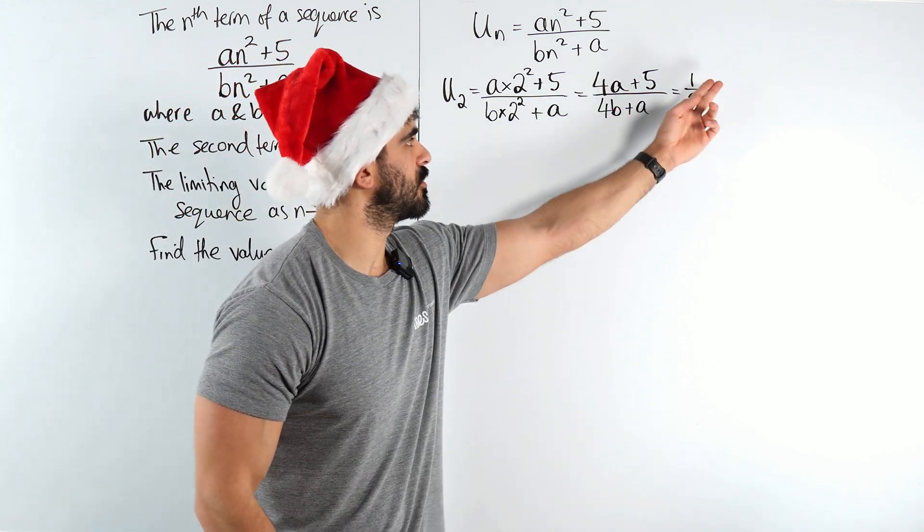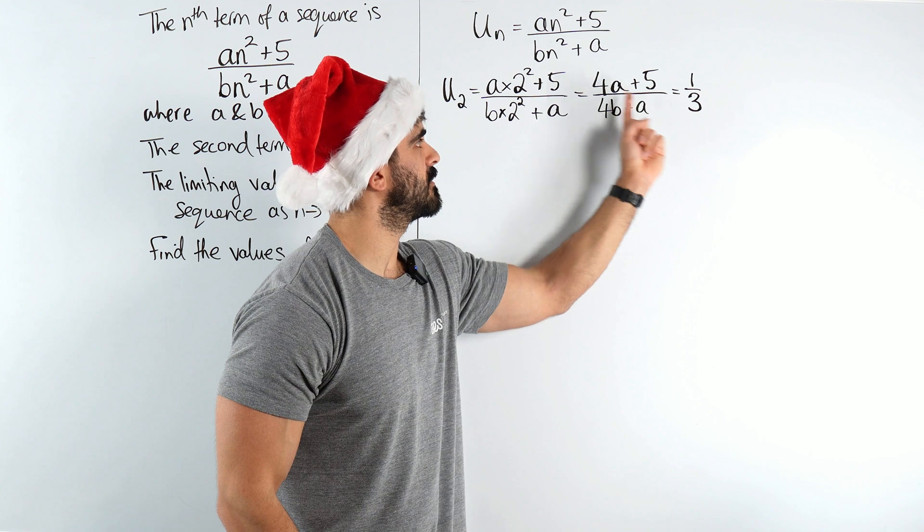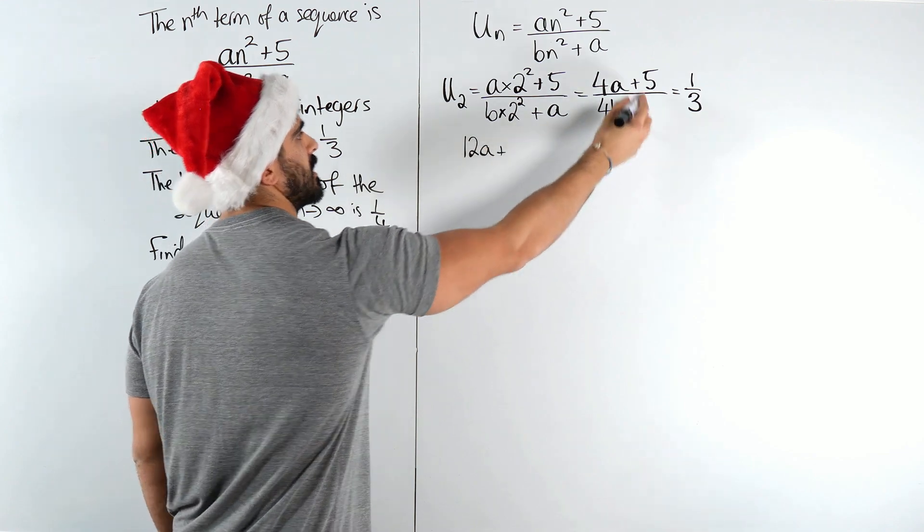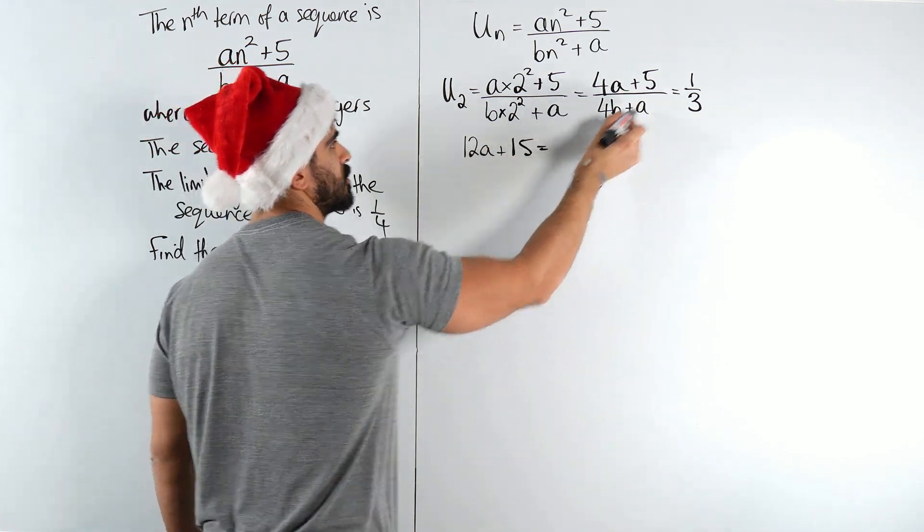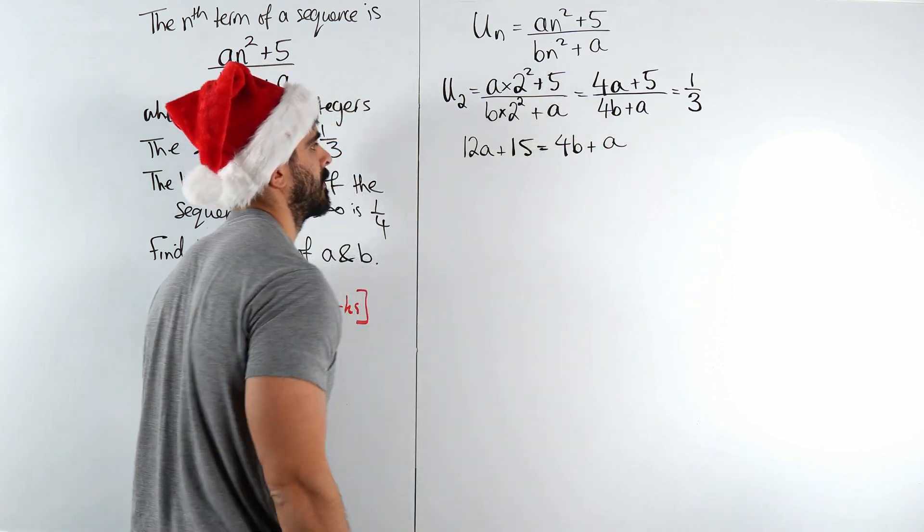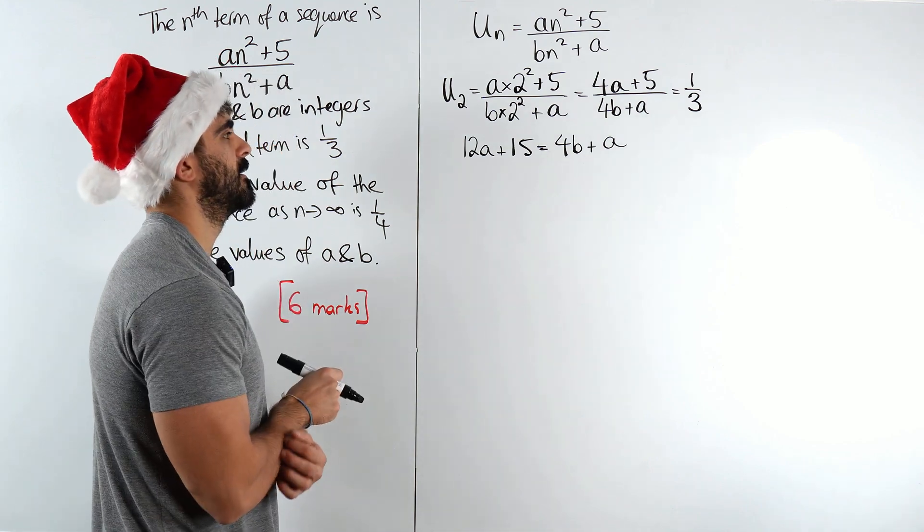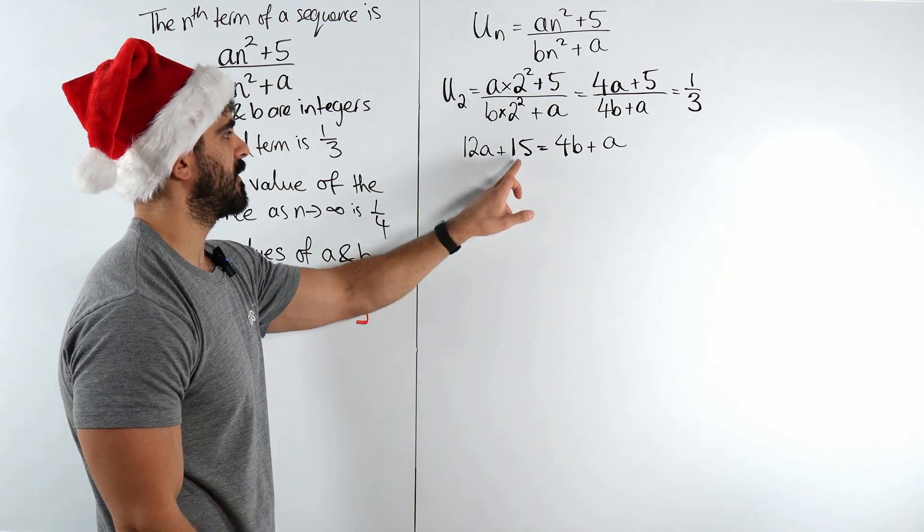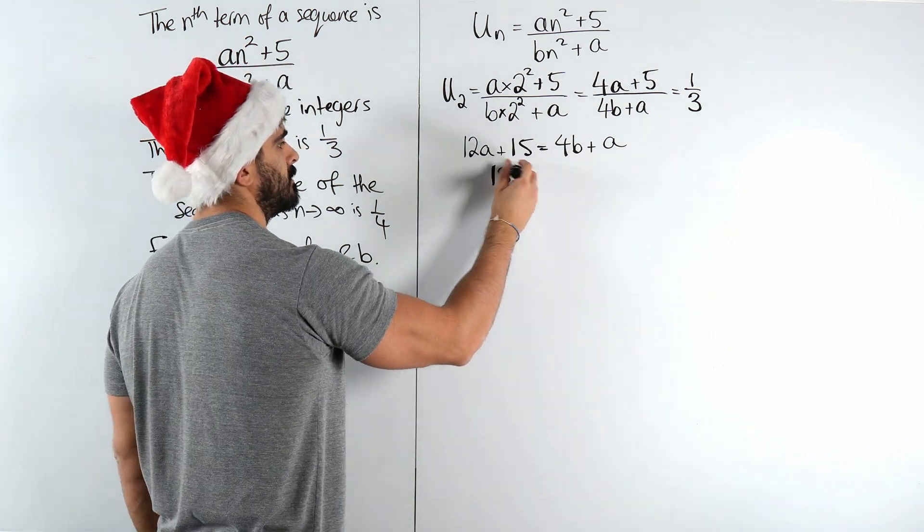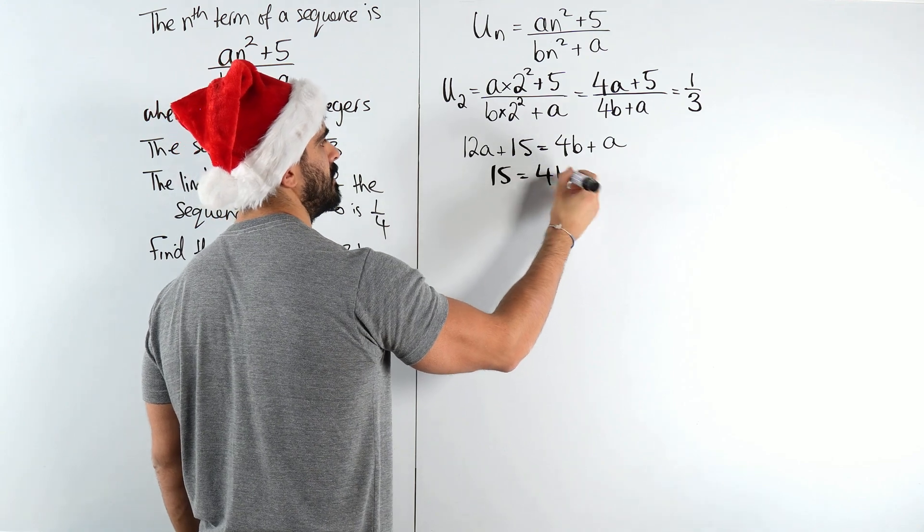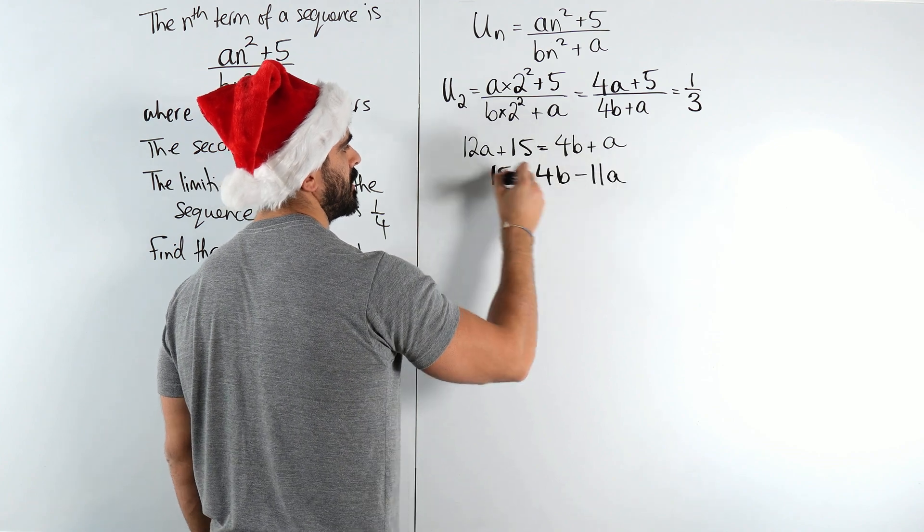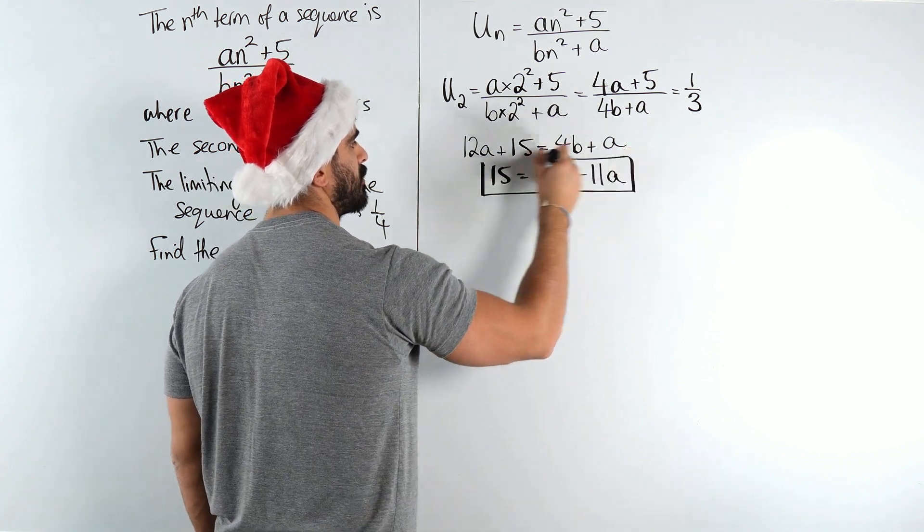So the next thing I'm going to do is cross multiply. So we have 4a + 5 times 3, I'm going to get 12a + 15 multiplying through there, equals 4b + a. Now I think I want to keep that 15 positive, I'm actually going to move the 12a. So I get 15 = 4b + a - 12a, which is 15 = 4b - 11a. Okay, there is my first equation.